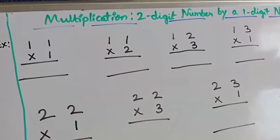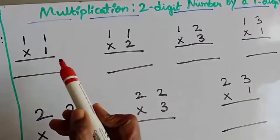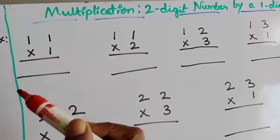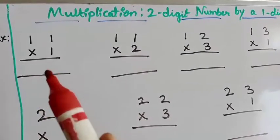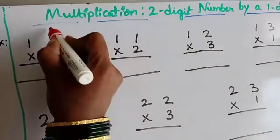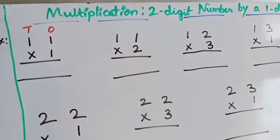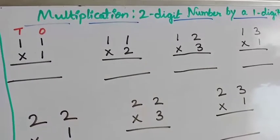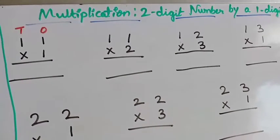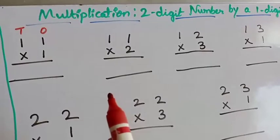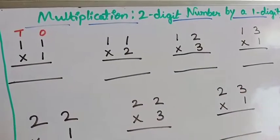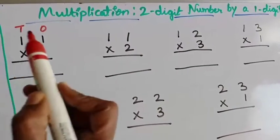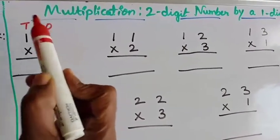The first example is 11 into 1. The first step is you have to write the place value — that is the 1's place and 10's place. As I told you in the previous class, you have to put the arrow mark. This method will help you to solve two-digit number multiplication. So first, write the 1's place and 10's place.